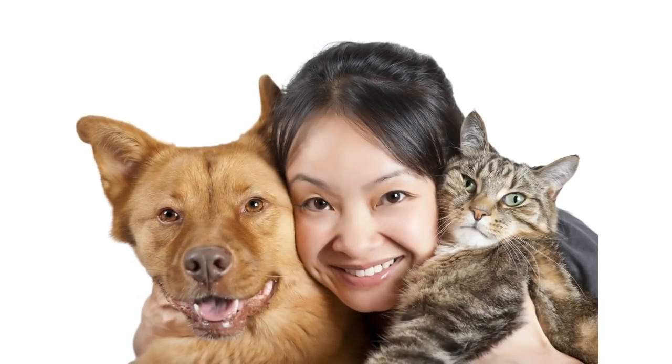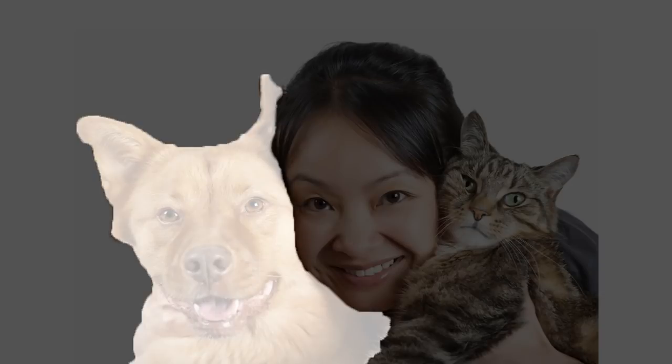Conceptually, the masked R-CNN is similar to the faster R-CNN. Masked R-CNN additionally outputs the object mask using pixel-to-pixel alignment. This mask is a binary mask outputted for each region of interest.